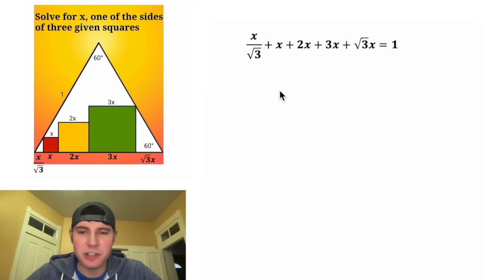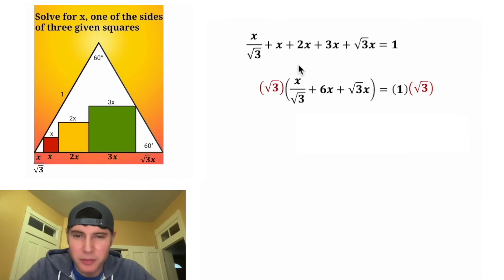So now we have all these pieces in terms of X. And if we add them all together, they're going to be equal to the side length of 1. And then we can combine like terms: X plus 2X plus 3X is equal to 6X. And we can copy down everything else. And now from here, I'm starting to regret not rationalizing the denominator. But that's totally fine. We can fix this. Let's multiply both sides by radical 3. Radical 3 times the first term is going to be radical 3X over radical 3. And the radical 3s cancel each other out to give us X.